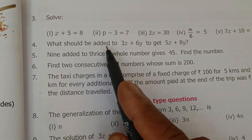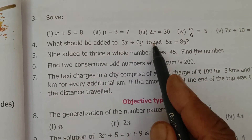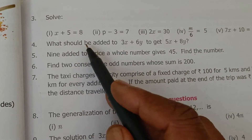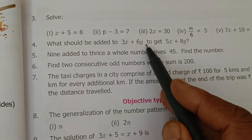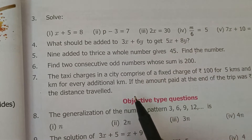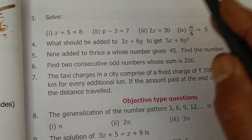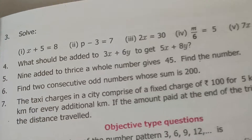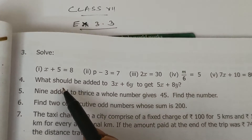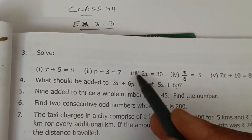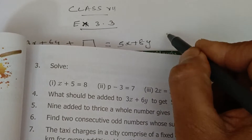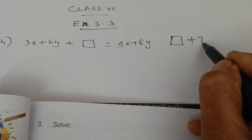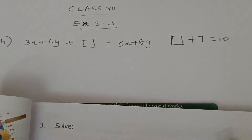Question 4: What should be added to 3x + 6y to get 5x + 8y? To understand this, let's think of the same question in terms of numbers. Instead of 3x + 6y, we'll use numbers. Fill in the blanks: what should be added to 7 to get 10?